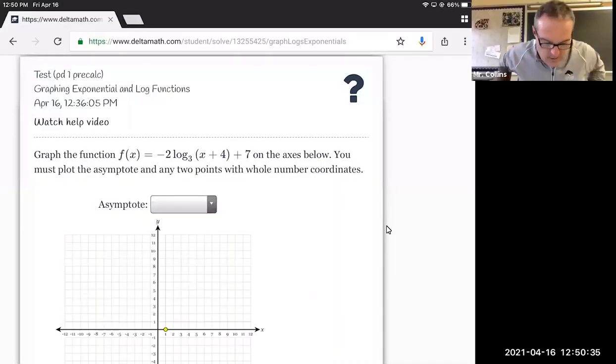Hi guys, Mr. Collins here. We're going to look at one of these DeltaMath problems involving graphing a log function. You can see here, all they want is to put in an asymptote, which is pretty easy to find, and then just get two ordered pairs. But it's not the easiest function in the world: negative two log base three of x plus four plus seven.